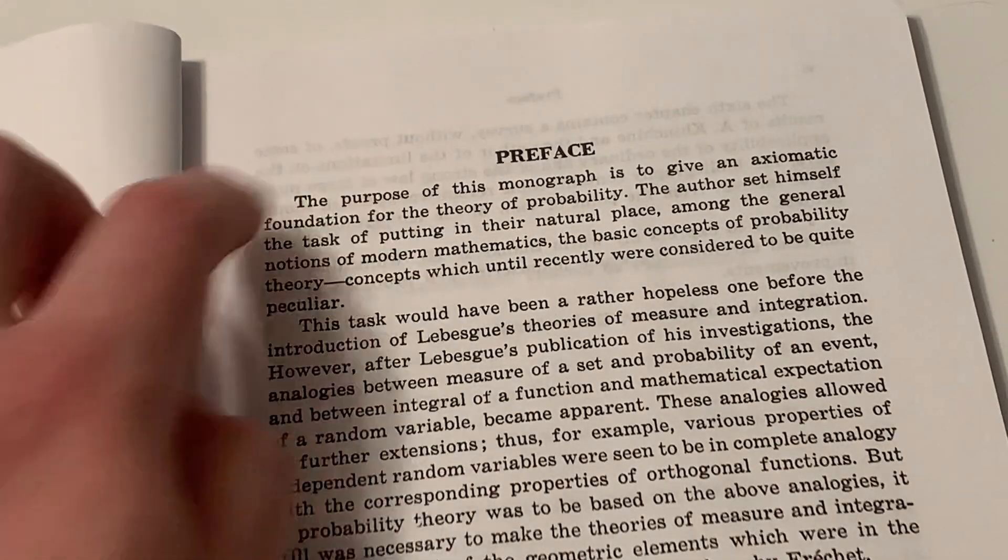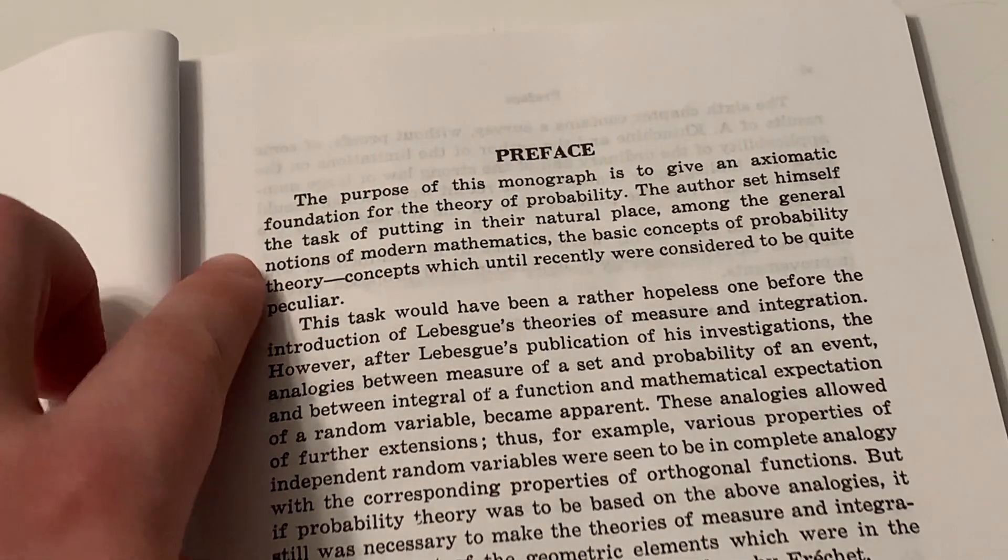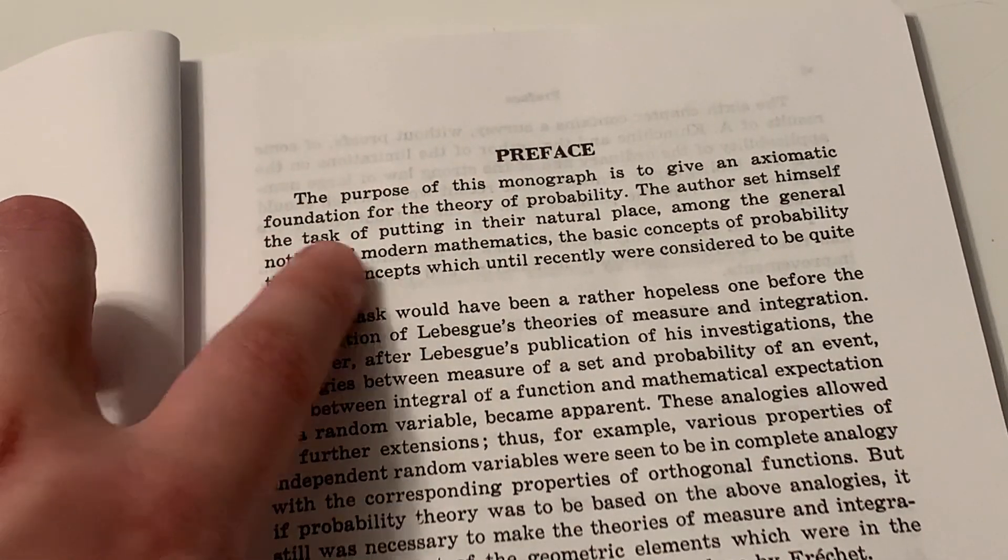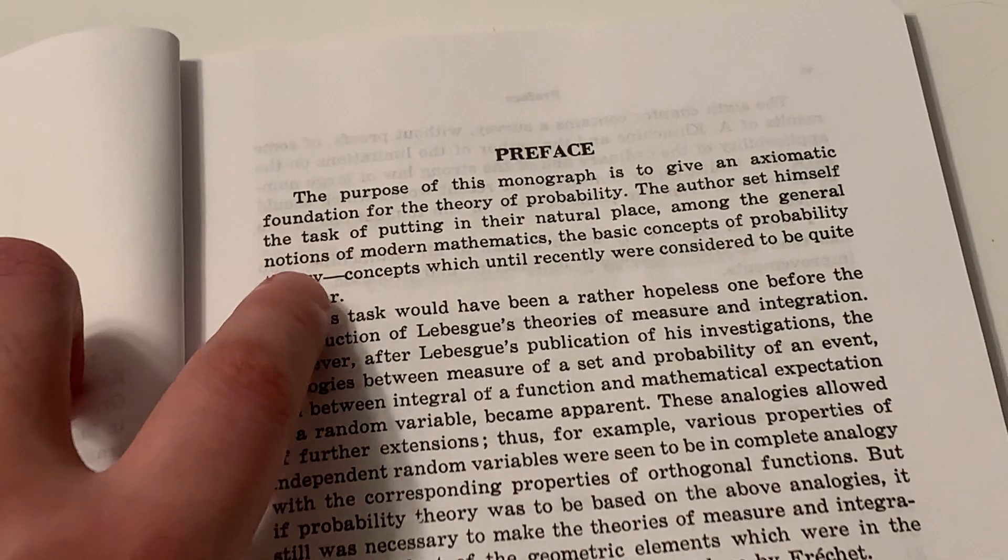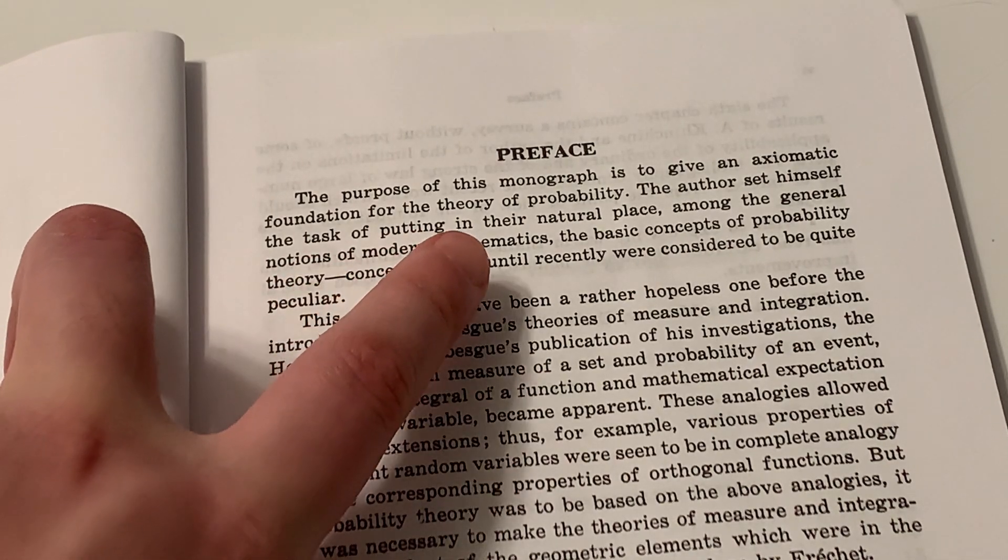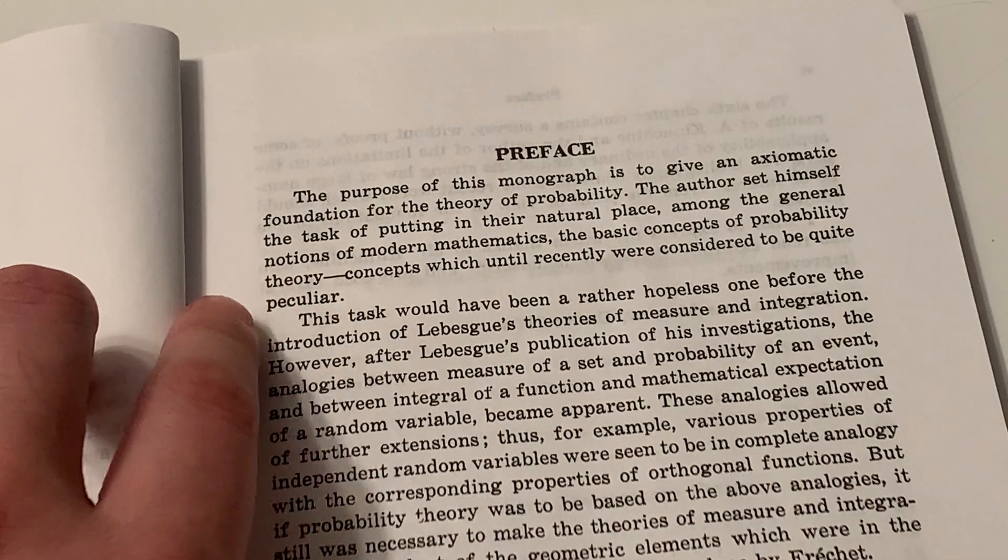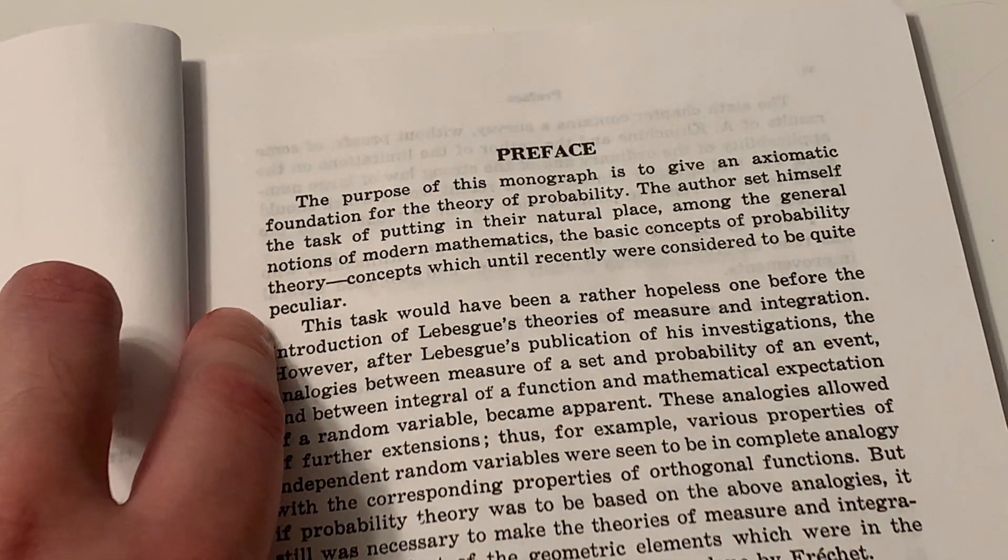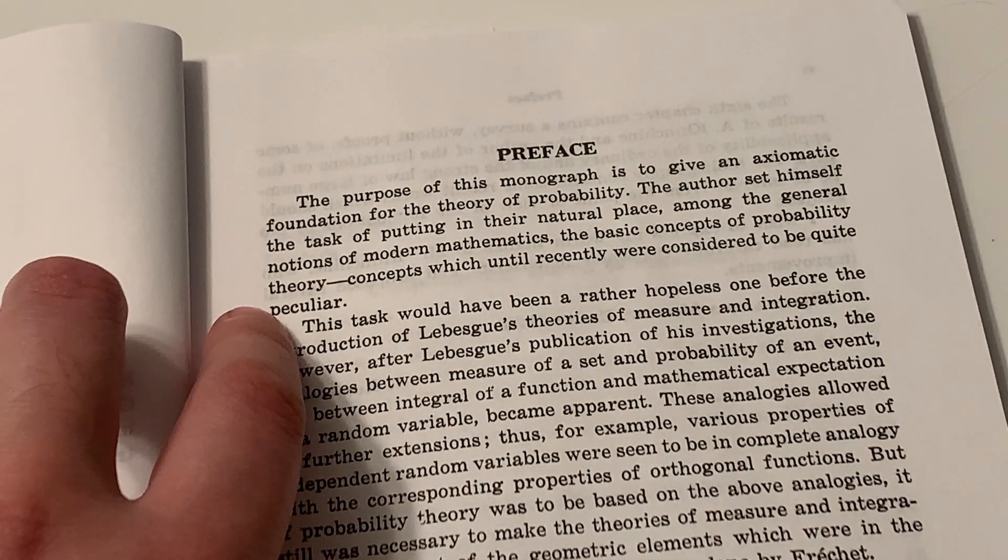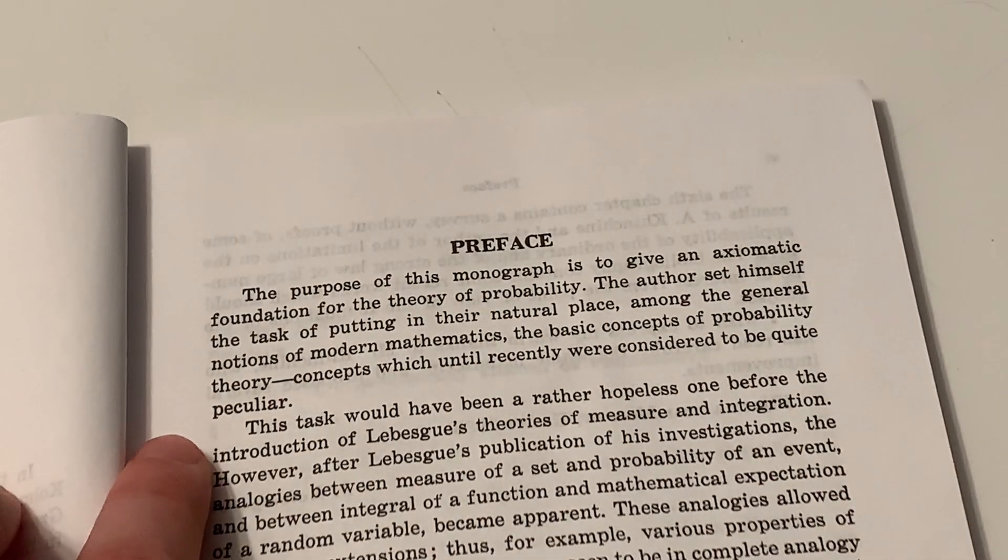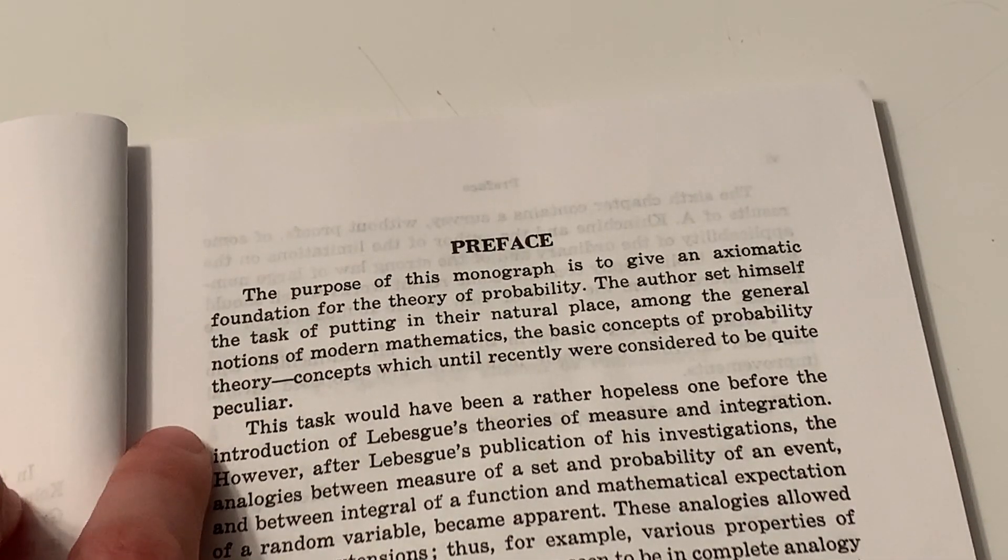Here, this is the original preface written by Kolmogorov. The purpose of this monograph is to give an axiomatic foundation for the theory of probability. The author set himself the task of putting in their natural place among the general notions of modern mathematics the basic concepts of probability theory. Concepts which, until recently, were considered quite peculiar. And the next sentence is perhaps the most important one of this preface.